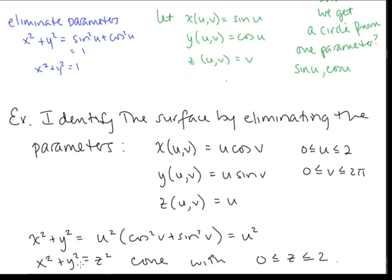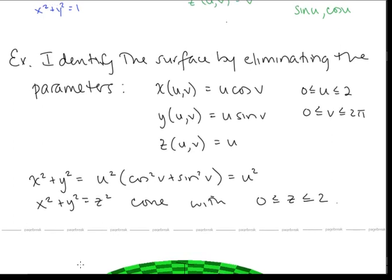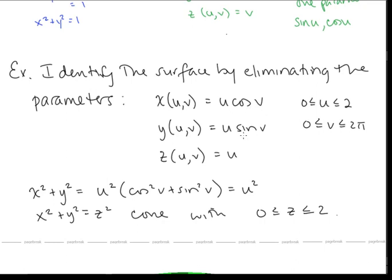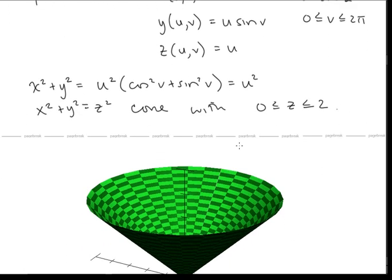Let's take another example — identify the surface by eliminating the parameters. I see a cosine v and a sine v, so let's compute x squared plus y squared, which gives us u squared. We also have z equal to u, so x squared plus y squared equals z squared — that's our cone. The restriction u going from 0 to 2 tells us the radius can be at most 2 and z is at most 2. v going from 0 to 2π gives us the entire circle. And that cone looks like this.